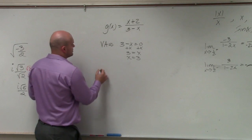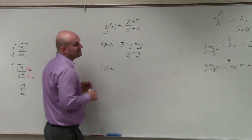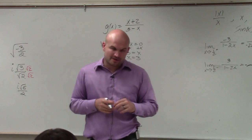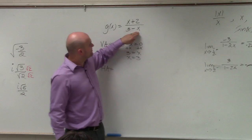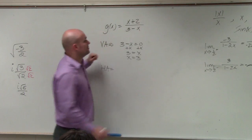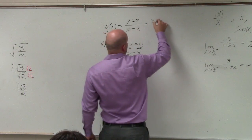To identify the horizontal asymptote, we need to look at the degrees of the numerator and the denominator. Now what we notice is the denominator is not in descending form. So what I'm going to do is I'm going to rewrite this in descending form.